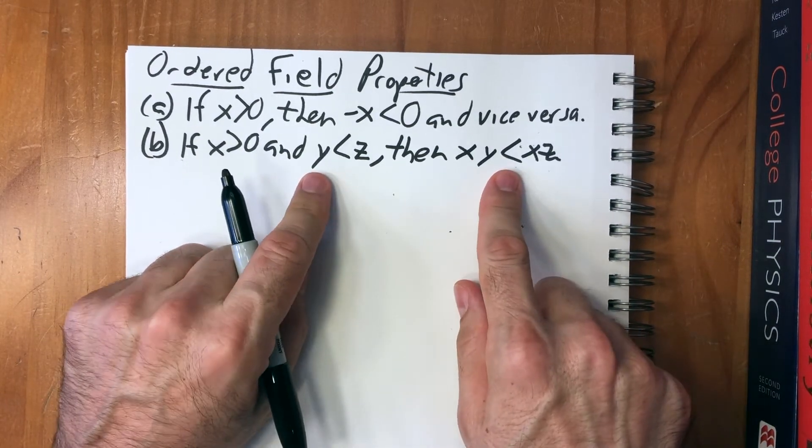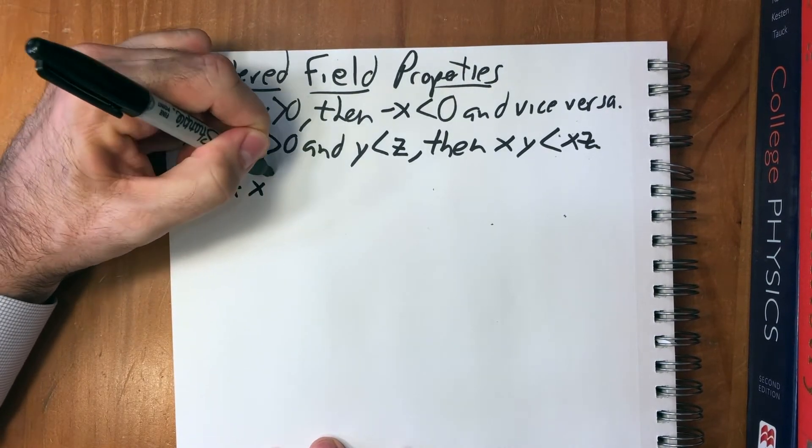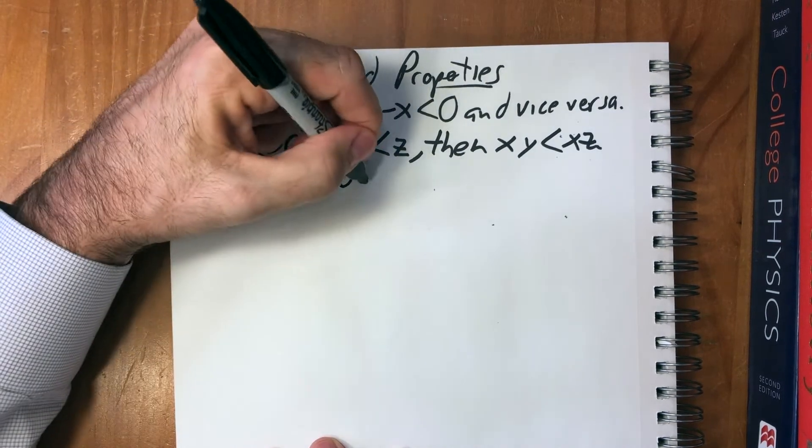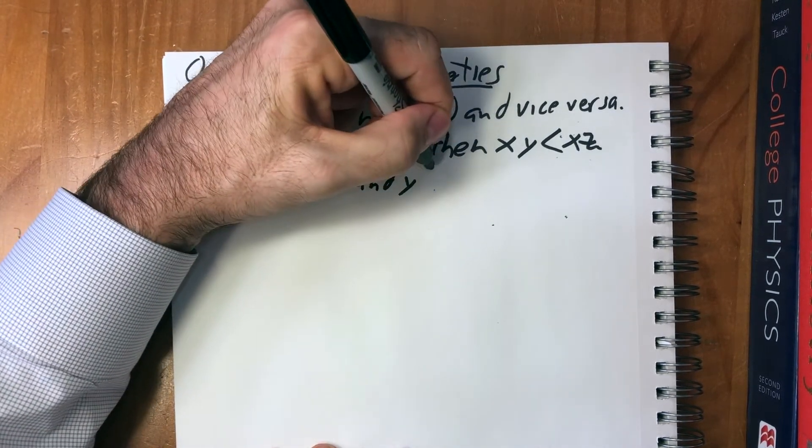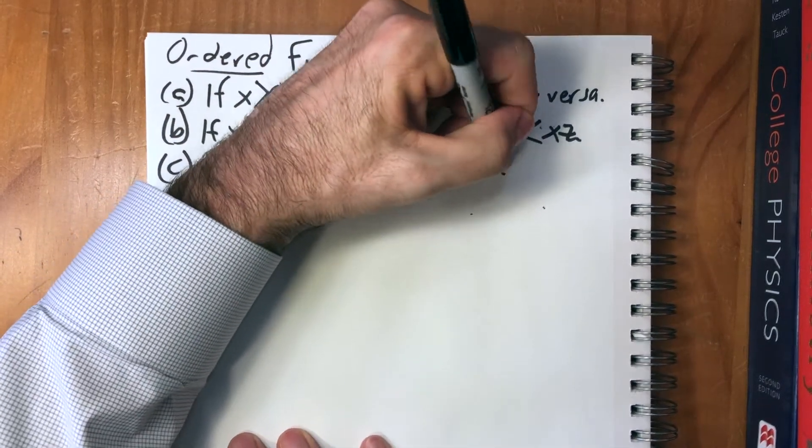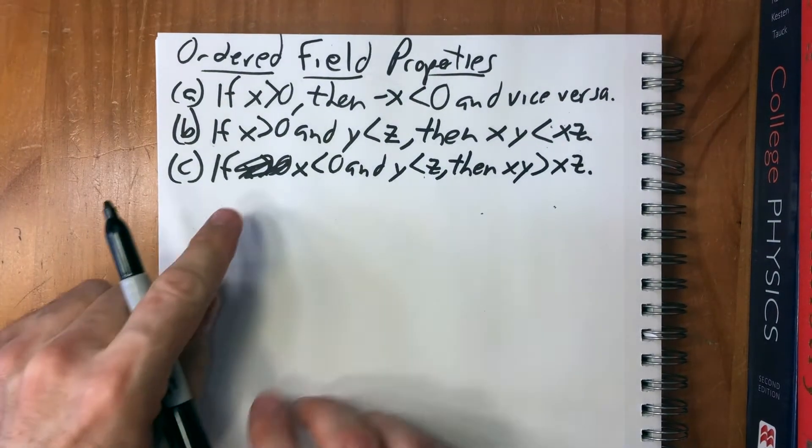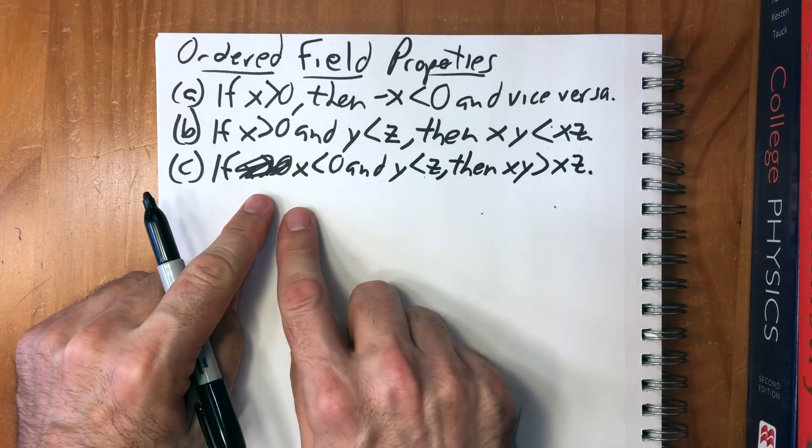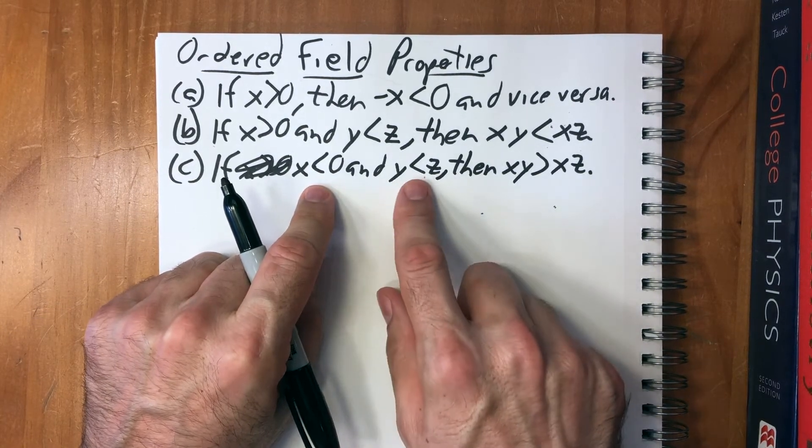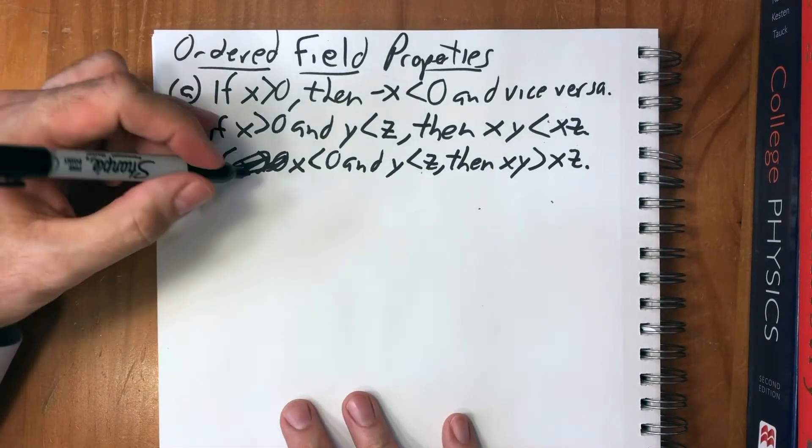C, if x is less than zero and y is less than z then xy is greater than xz. So this switches the inequality. If x is negative then the inequality switches.